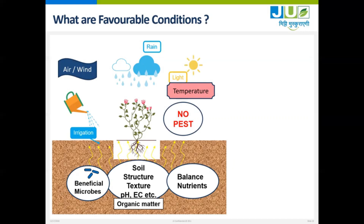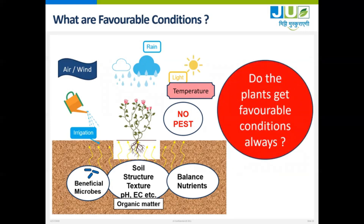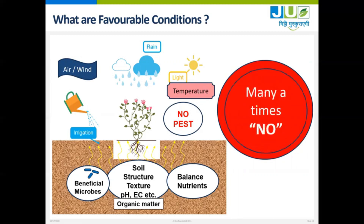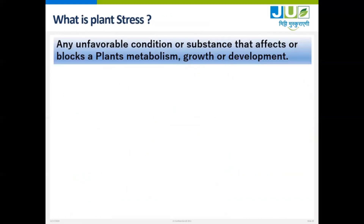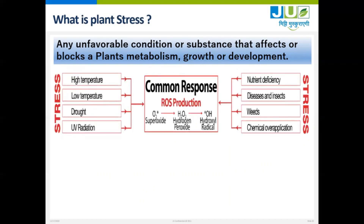If the plant gets all favorable conditions it can give a wonderful yield. But do the plants get favorable conditions always? Many times no. It means the plant passes through stress from sowing till harvest many times. Any unfavorable condition or substance that affects or blocks a plant's metabolism, growth, or development is called plant stress.